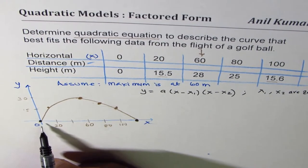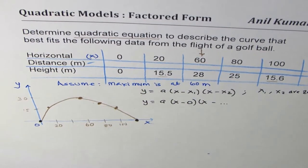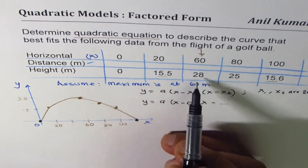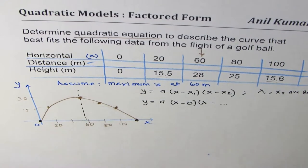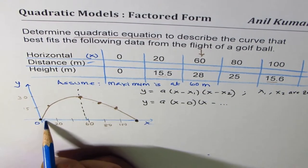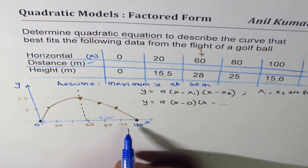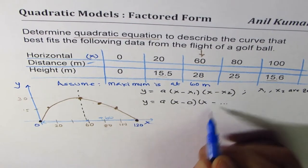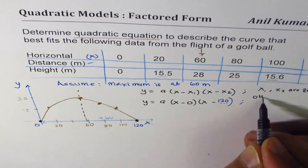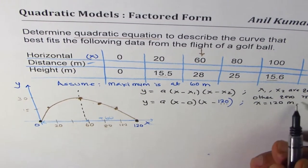One zero is given at x = 0, so we write y = a(x − 0)(x − x₂). We need to find the other zero. Since we assume the maximum is at x = 60, the axis of symmetry is x = 60. From symmetry, if one zero is 60 units to the left, the other must be 60 units to the right of the axis — giving us a second zero at x = 120 meters.